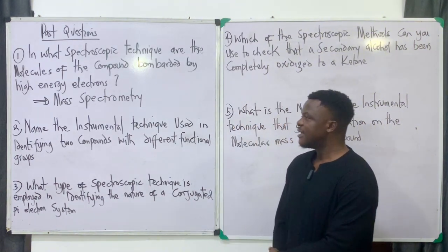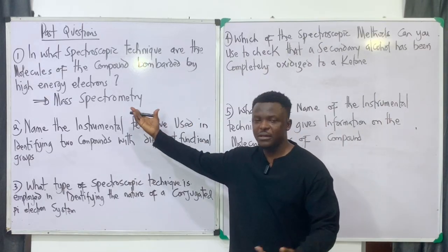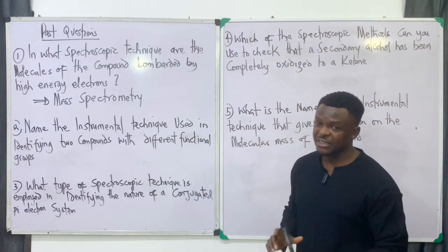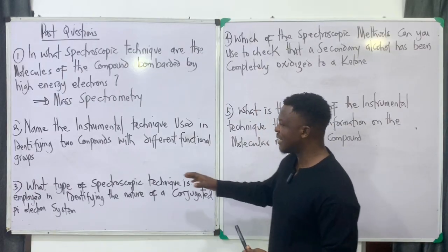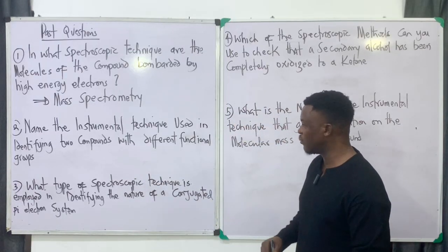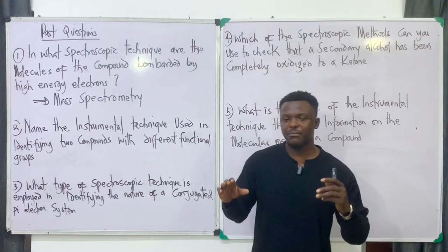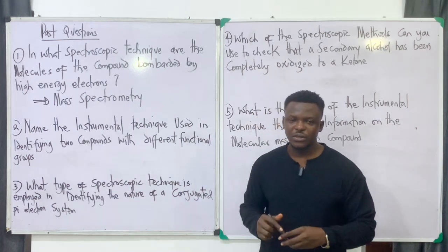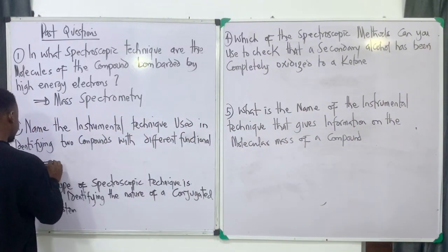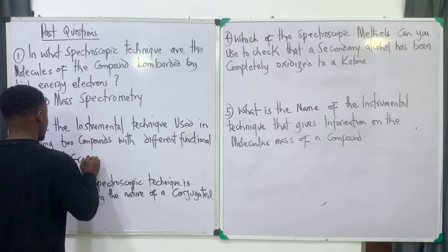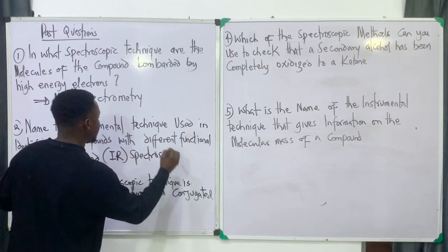Practice question two: Name the instrumental technique used in identifying two compounds with different functional groups. The answer is infrared spectroscopy, because infrared is what gives us information about the functional groups of organic compounds.